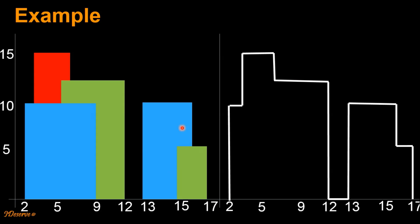Similarly, for this set of buildings, our skyline would start from 13, go vertically, then this horizontal line segment, this vertical line segment, this part and finally this part. Note that the line segment between 12 to 13 is also part of the skyline indicating the presence of ground between these two sets of buildings.